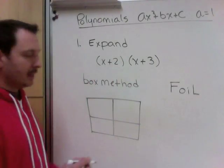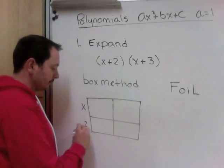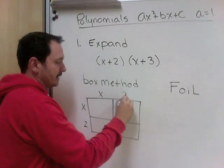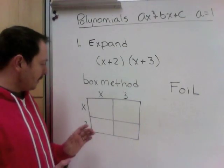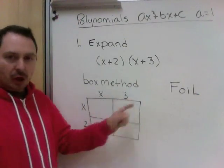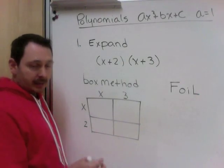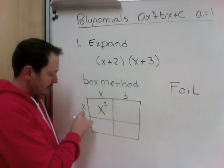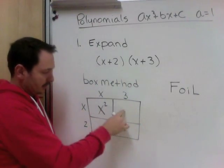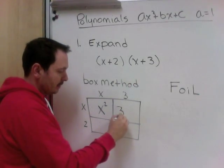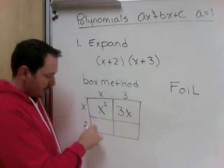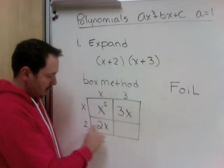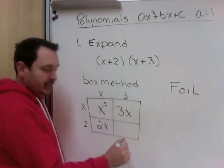So the box method. There are two terms here, an x and a plus two. So I'm going to put an x and a two. x plus three, I put an x and a three. And the box method, we just have to make sure that each of these multiply each of the top. And then we're going to collect. So x times x is x squared. x times three, representing this box, x and three is three x. This box down here, x times two, two x. And our last box, two times three is six.